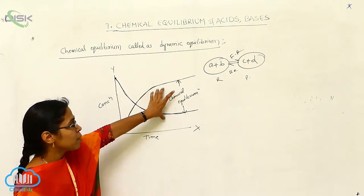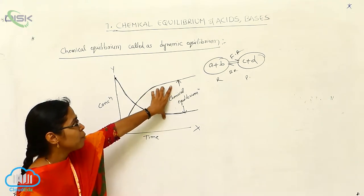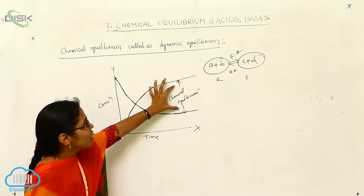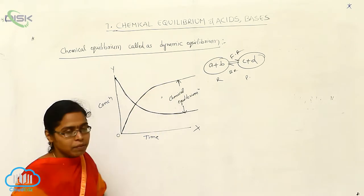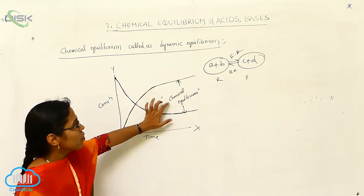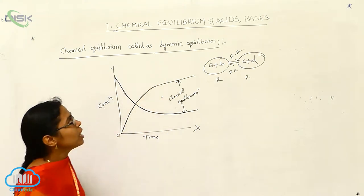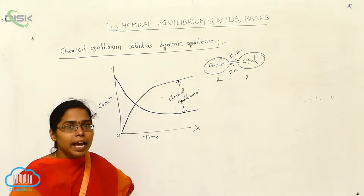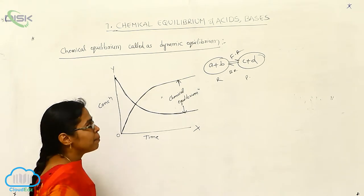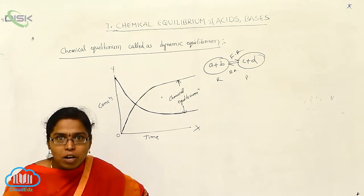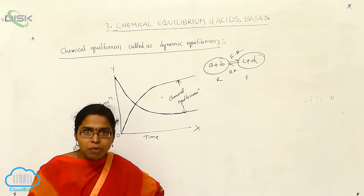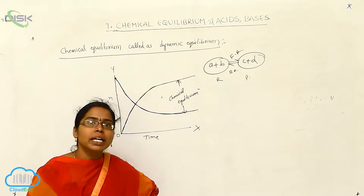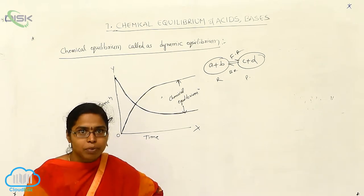This process, whenever both reactants and products reach equal concentration, is called chemical equilibrium. This chemical equilibrium is considered as dynamic equilibrium, where the rate of the forward reaction is always equal to the rate of the backward reaction.